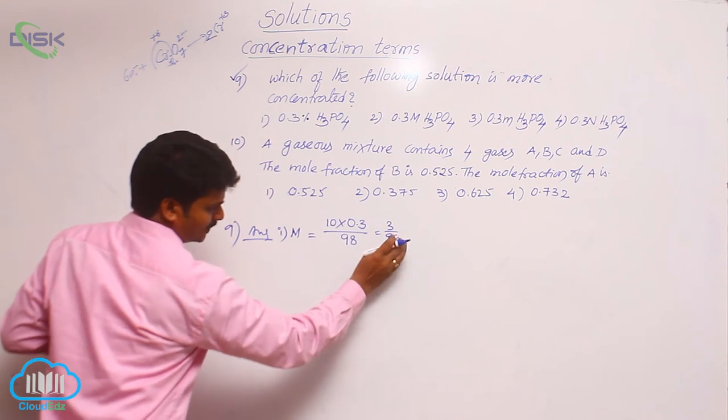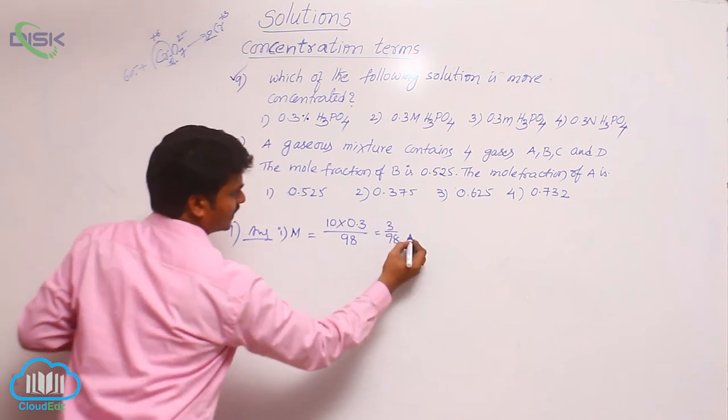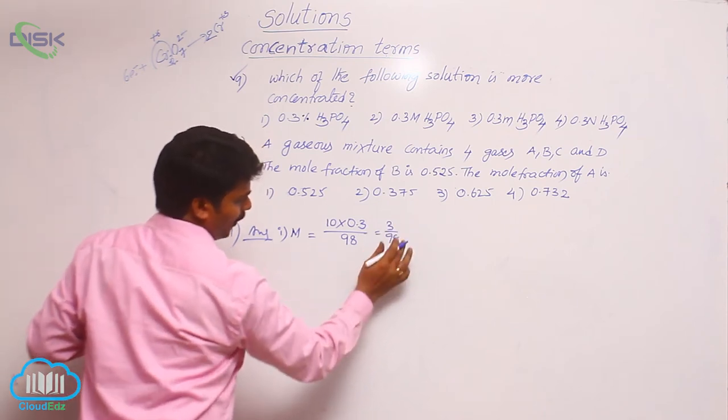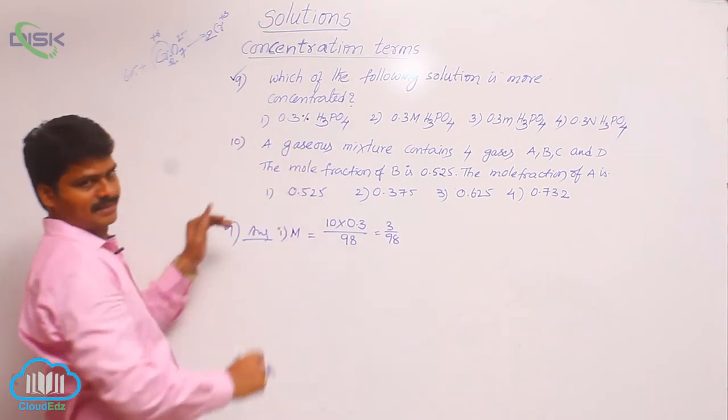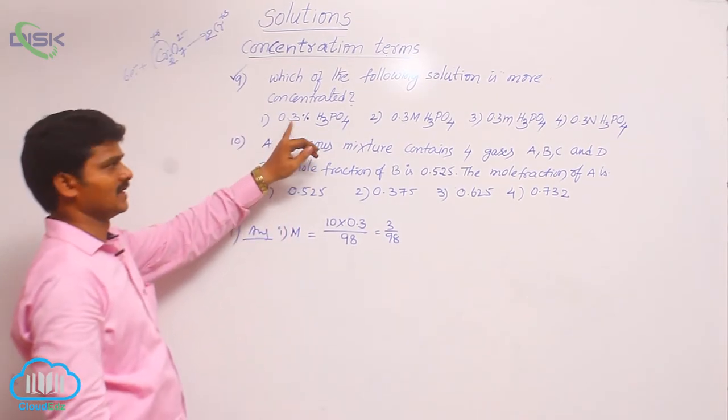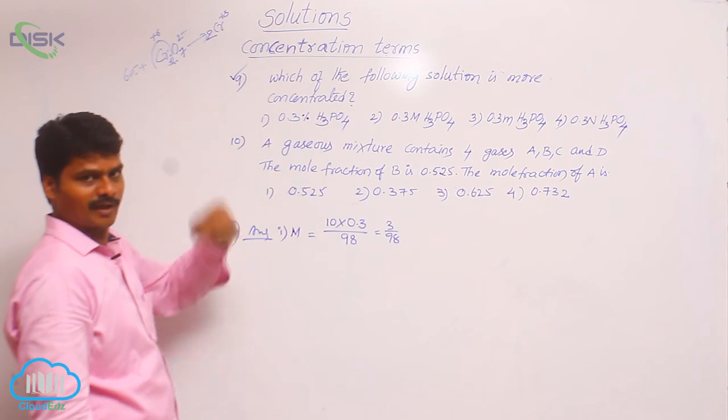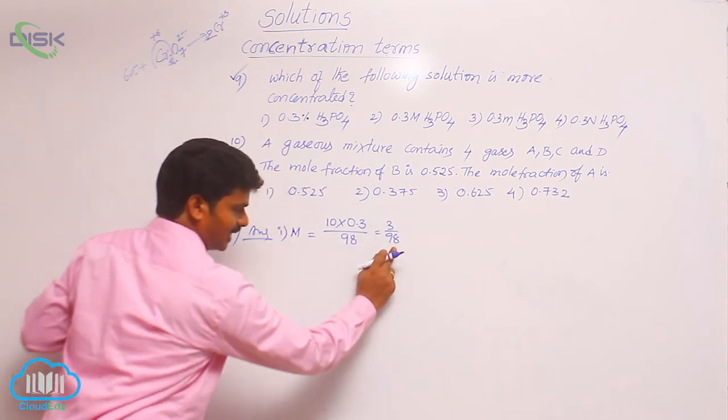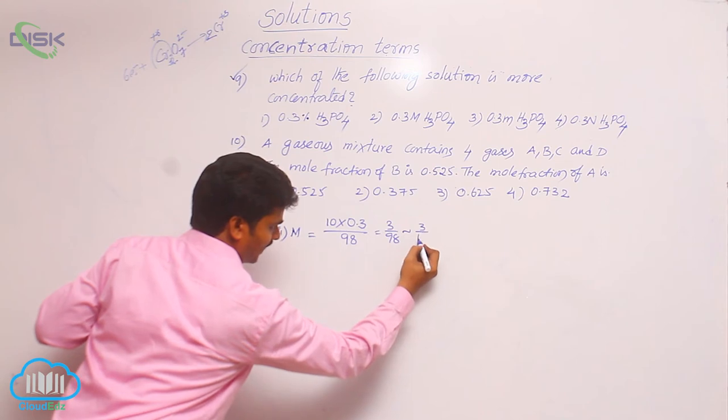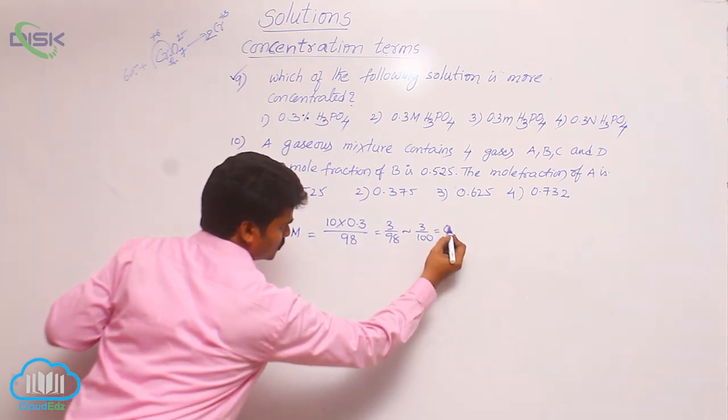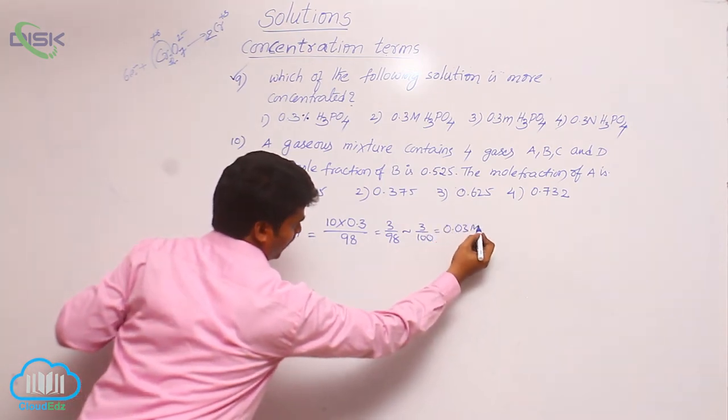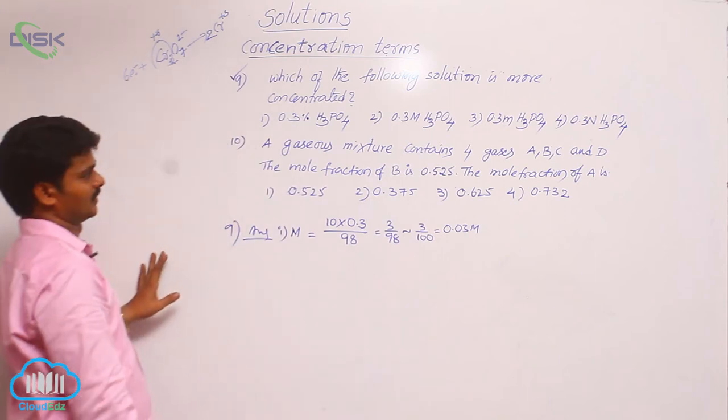If it is approximately 100, then it is slightly greater than 0.03. If we consider 0.3 percent as weight by volume, then it is 3 by 98 which is approximately 3 by 100. 3 by 100 means 0.03 molar.